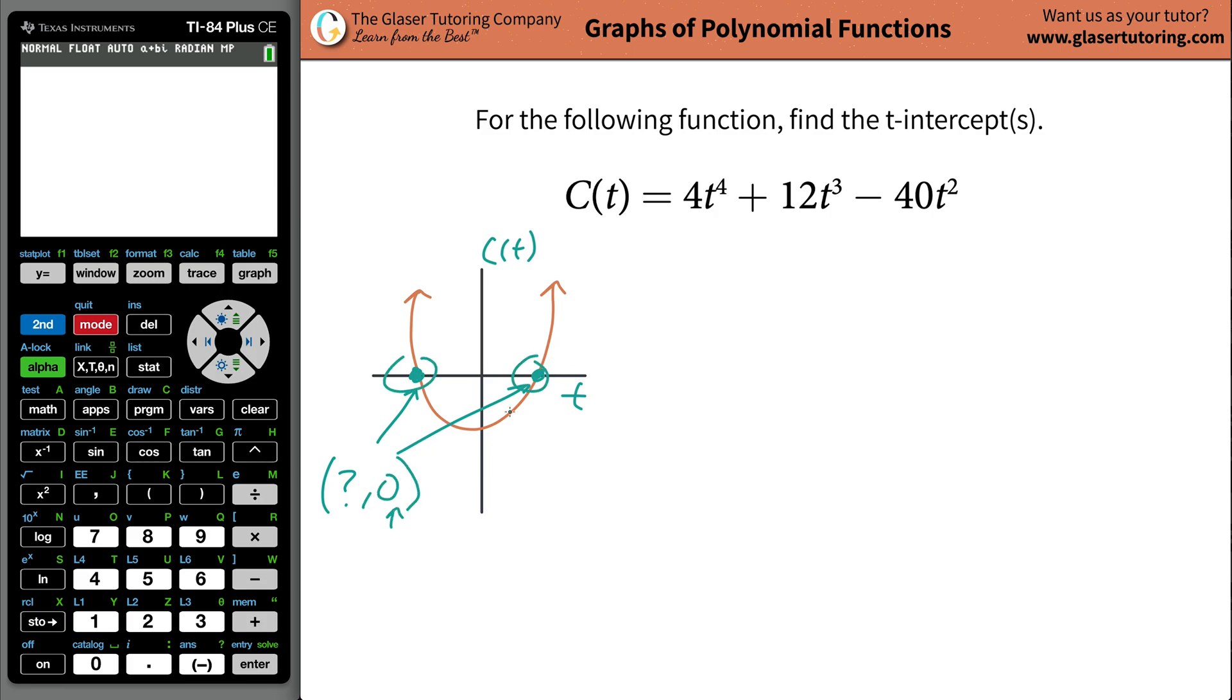Remember, coordinates are always going to be written as x comma y. In this case, the problem is the t is the x and the C(t) is the y. But you know that the function's value of these points, any point that crosses that horizontal axis, the function value will be zero, y value will be zero. In other words, y will be equal to, and it's the same thing in this problem as just the C(t), and that should be equal to zero.